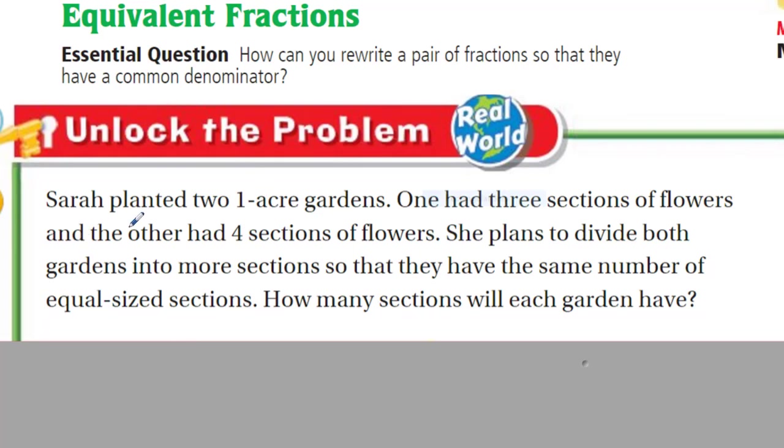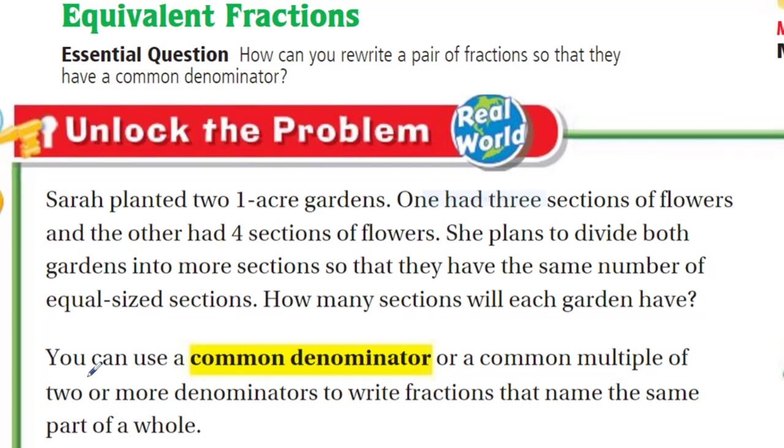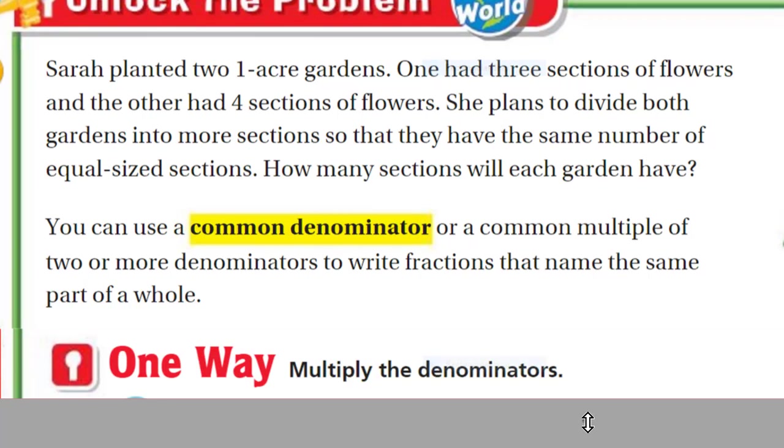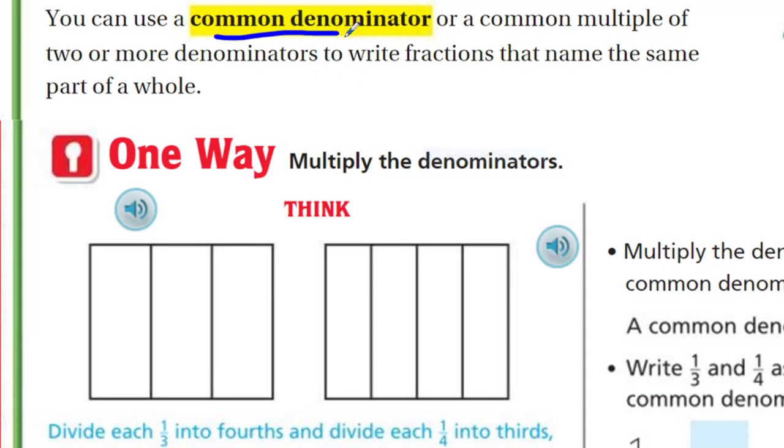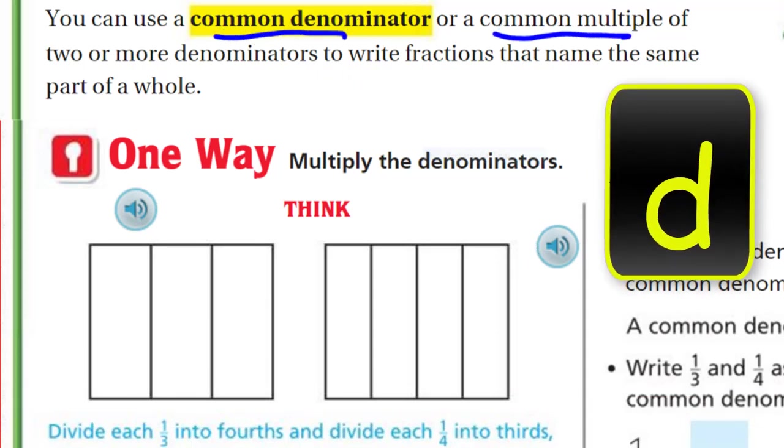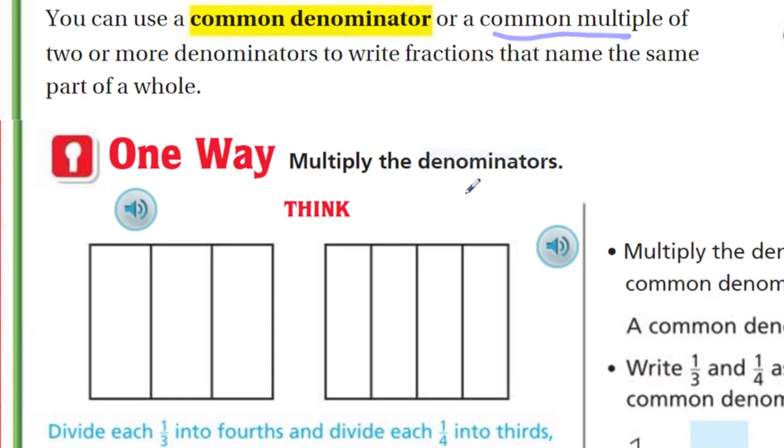It says Sarah planted two one-acre gardens. She has one acre garden, she's got two of them. One had three sections, and the other had four sections. She plans to divide both gardens into more sections, so that they have the same number of equal sized sections. Oh, I like that word, equal size. How many sections will each garden have? I don't know. It's a great question. You can use a common denominator or a common multiple of two or more denominators to write fractions that name the same part of a whole.